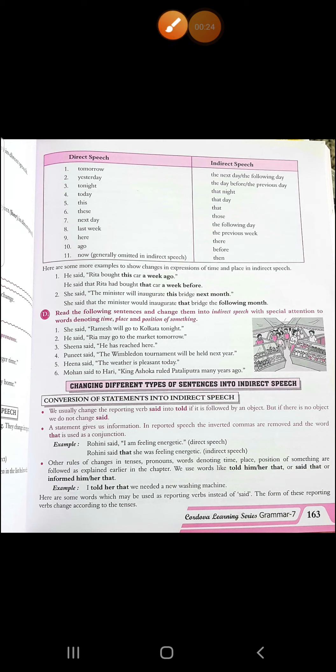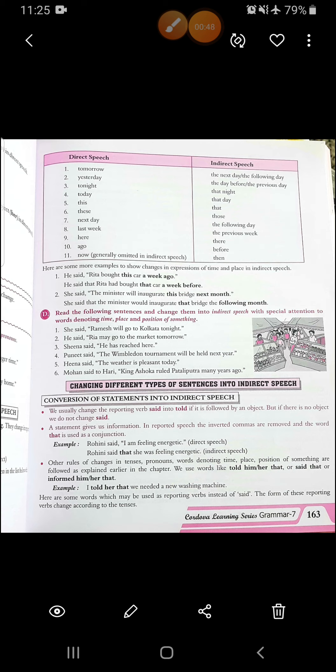I hope you all remember how there are four types of sentences. Now, here in this part, we will see how to change them into indirect speech. The first one is conversion of statements into indirect speech. We usually change the reporting verb 'said' into 'told' if it is followed by an object. If there is no object, we do not change 'said' — said remains said.